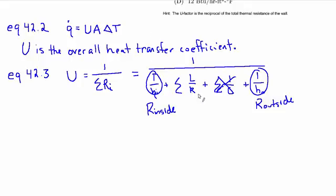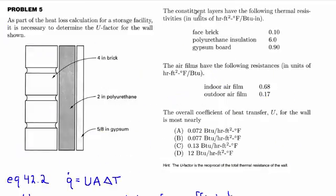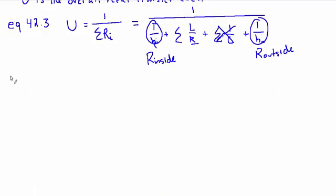We weren't given thermal conductivities k. Instead, we were given the thermal resistivities of the constituent layers. The difference being that the thermal resistivities, and I'm going to use little r for this, is the reciprocal of the thermal conductivity k. So instead of taking the sum of L over k, we're going to take the sum of L times r.